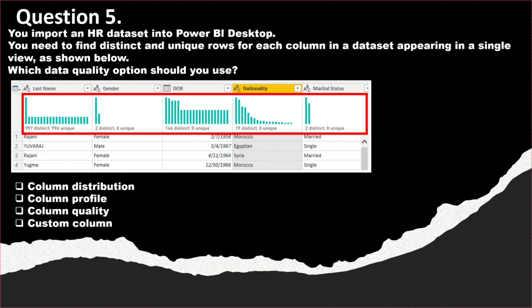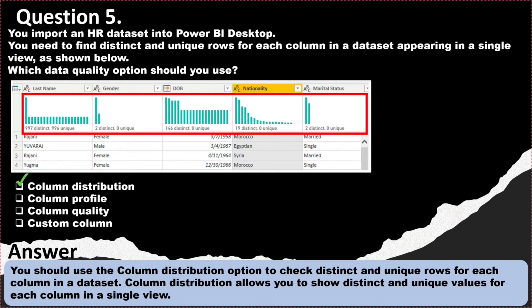Question number 5. You import an HR data set into Power BI desktop. You need to find distinct and unique rows for each column in a data set appearing in a single view as shown below. So which data quality option should you use? The options are column distribution, column profile, column quality, and custom column. The correct answer is column distribution. Column distribution is always used to show distinct and unique values for each column in a single view.